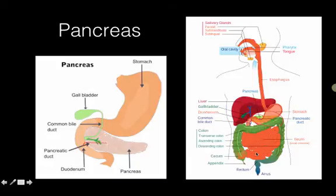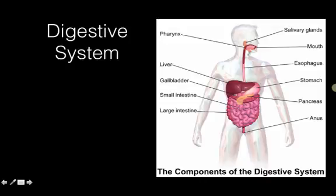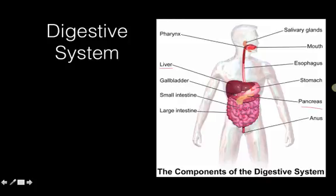To summarize: you chew food in your mouth — your teeth grind it into smaller pieces and saliva starts the chemical process. Then it moves down your esophagus into your stomach, where acid and enzymes are added and it gets churned. It moves through the small intestine, where at the beginning — the duodenum — the liver adds bile and the pancreas adds digestive enzymes, so carbohydrates, lipids, and proteins get broken down and absorbed into your blood. Anything left over goes through the large intestine, where water and remaining nutrients and vitamins are removed, and the solid waste, or feces, leaves the body through the anus.